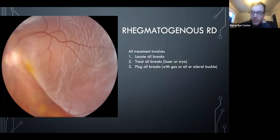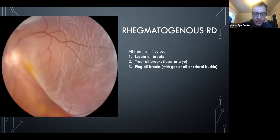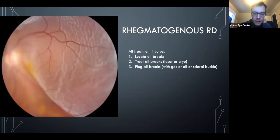The principles of treatment for retinal detachments are: find the breaks, treat the breaks, and plug the breaks. All ways of fixing detachments do these three things. A buckle is another way to plug the break and allows time for cryo or laser to create adhesion. The gas, oil, and buckle are used to temporarily close the break while cryo or laser provides the long-term solution. OCAPs generally won't ask details about vitrectomy or detailed buckling questions.